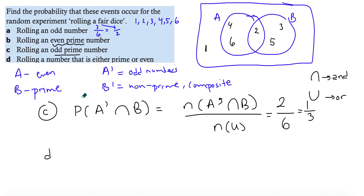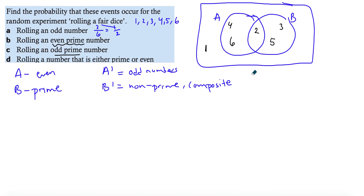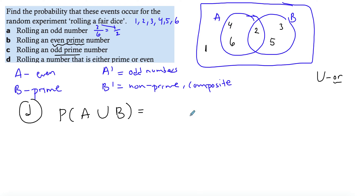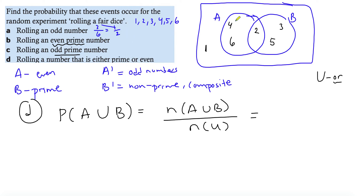For part D, the probability of rolling a number that's either prime OR even — I'm looking at the union, which gives you the 'or'. So this is N(A union B) divided by N(U). Highlighting the A union B area on the Venn diagram, I count five elements, divided by the total of six, giving five over six.